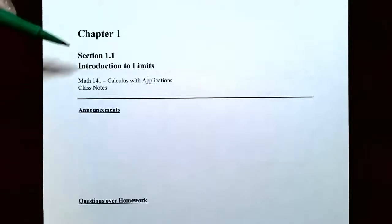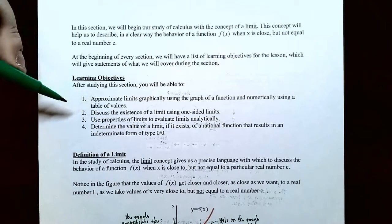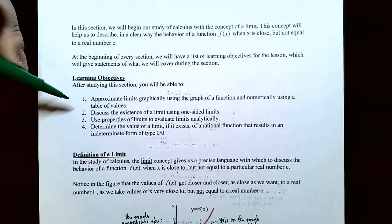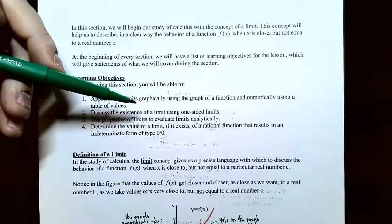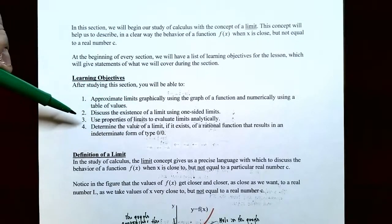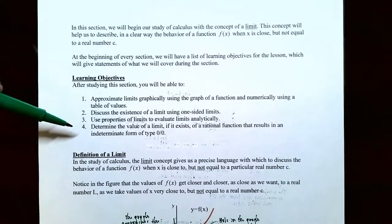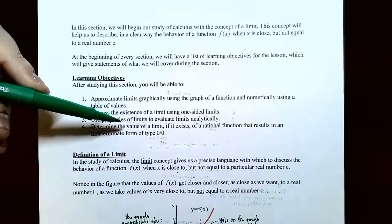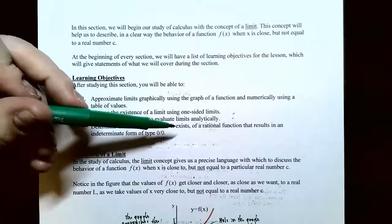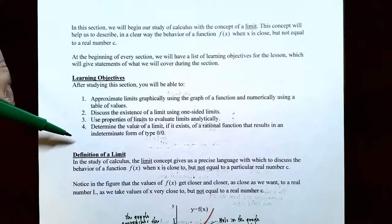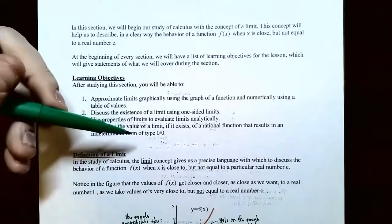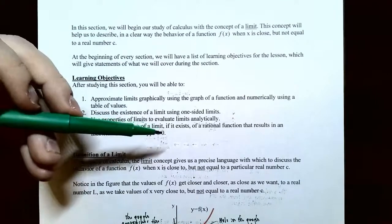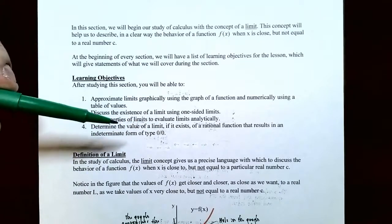Hey everyone, it's Professor Permanent. In this video, we're going to finish up our discussion on introduction to limits. From the previous video, we talked about finding a value of a limit graphically or using a table of values, which was finding a limit numerically. We also talked about the existence of a limit using one-sided limits and a two-sided limit. Now we're going to talk about how to find the value of a limit using algebraic methods — specifically, limit laws — and also how to determine the value of a limit for a rational function that gives an indeterminate form of type zero divided by zero.